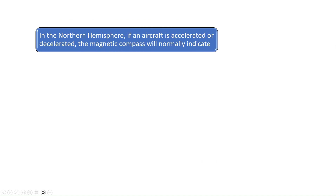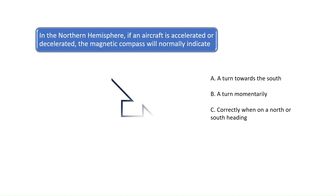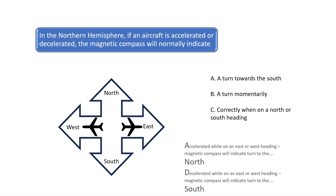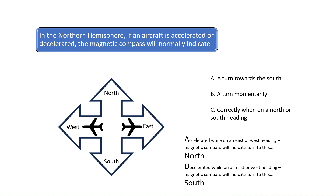Question 4. In the northern hemisphere, if an aircraft is accelerated or decelerated, the magnetic compass will normally indicate what? Magnetic compasses will show a turn to the north when accelerated on an east or west heading. Conversely, magnetic compasses will show a turn to the south when decelerated while on an east or west heading. One way to remember this is the phrase ANS — accelerated north, decelerated south. Magnetic compasses will be correct when an aircraft is accelerated or decelerated while on a north or south heading. Therefore the correct answer is C.